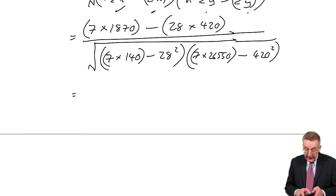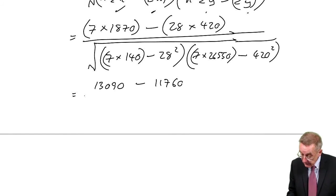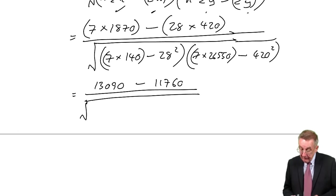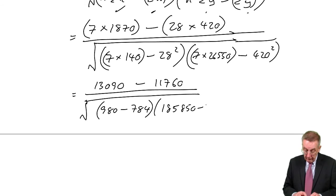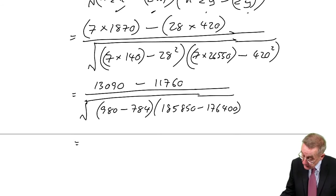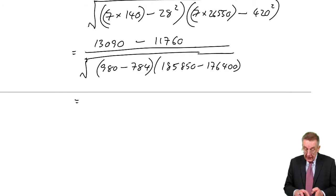I hope you're checking me, but let's have a go. 7 times 1870 is 13,090, minus 28 times 420 is 11,760, divided by the square root of 7 times 140. So we're all okay so far. So the top bit's now easy enough. So the numerator is 13,090 minus 11,760, is 1330.